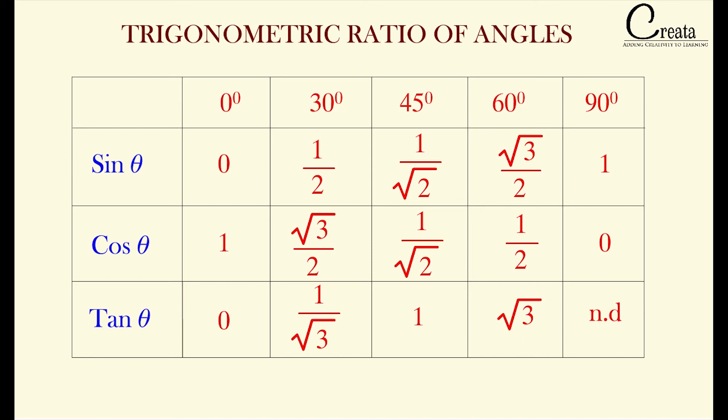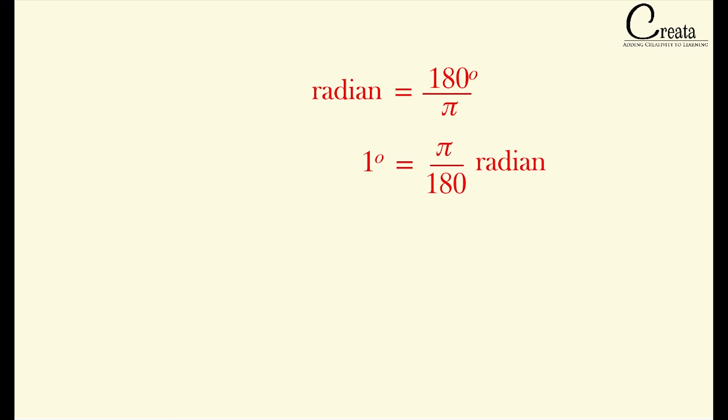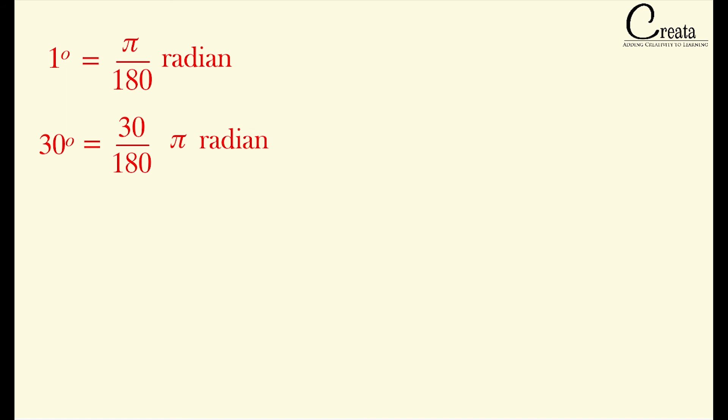Let's take these specific angles and calculate it in radian form. Let's begin with our first angle that is 30 degree. We know one degree is equal to pi upon 180 radian. So for 30 degree, it is pi by 180 into 30 which comes out to be pi by 6 radian. So we can say 30 degree is equal to pi by 6 radian.